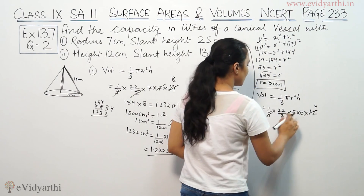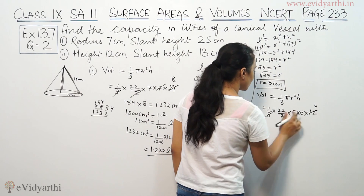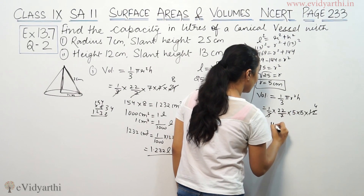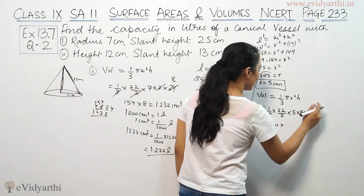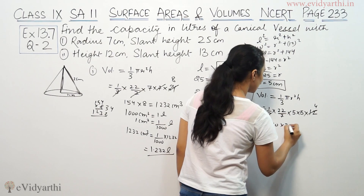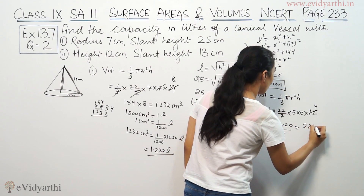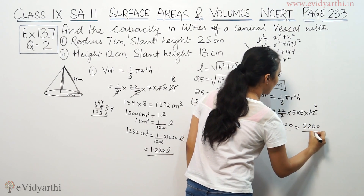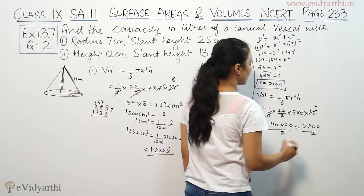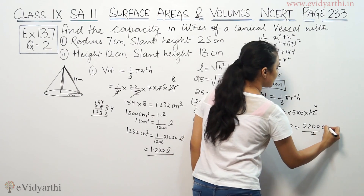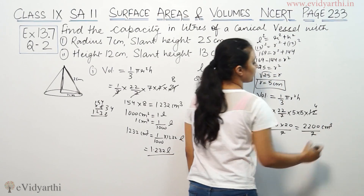So the volume works out to 22 × 5 × 5 × 12 / (3 × 7) = 22 × 100 / 7 = 2200/7 cm³, which is approximately 314.28 cm³.